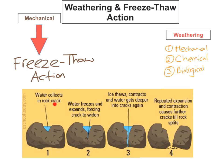For freeze-thaw action to occur, you need a frequent temperature change — the temperature must drop below 0 degrees Celsius and then rise back above 0 degrees Celsius during the day. What happens is rain collects into cracks in the rocks, and during the night the water freezes and expands, causing the rock to expand a little bit.